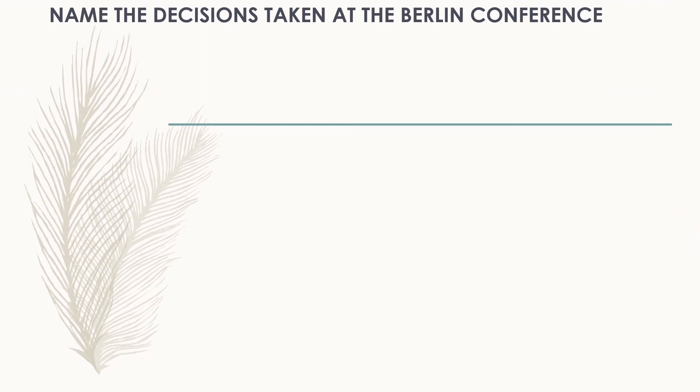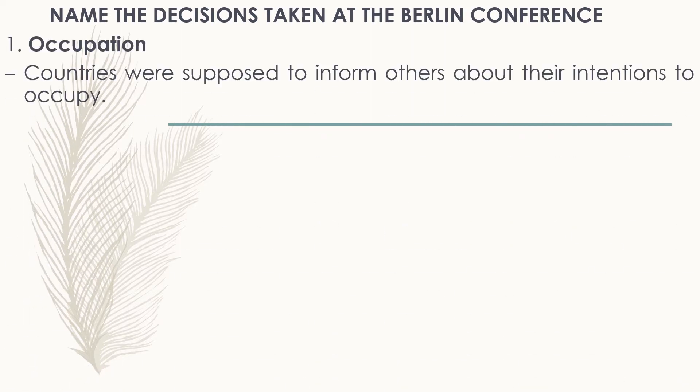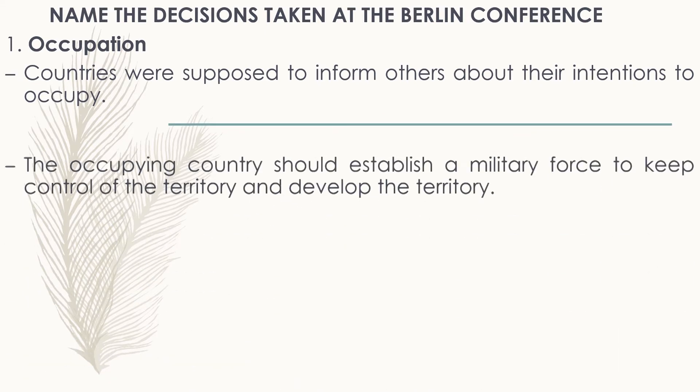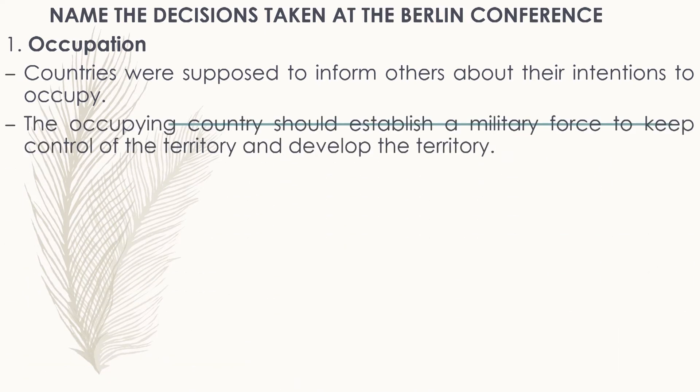The first decision taken at the Berlin Conference was about occupation. Countries were supposed to inform others about their intentions to occupy territories in Africa. The occupying country should establish a military force to keep control of the territory and develop that specific territory.